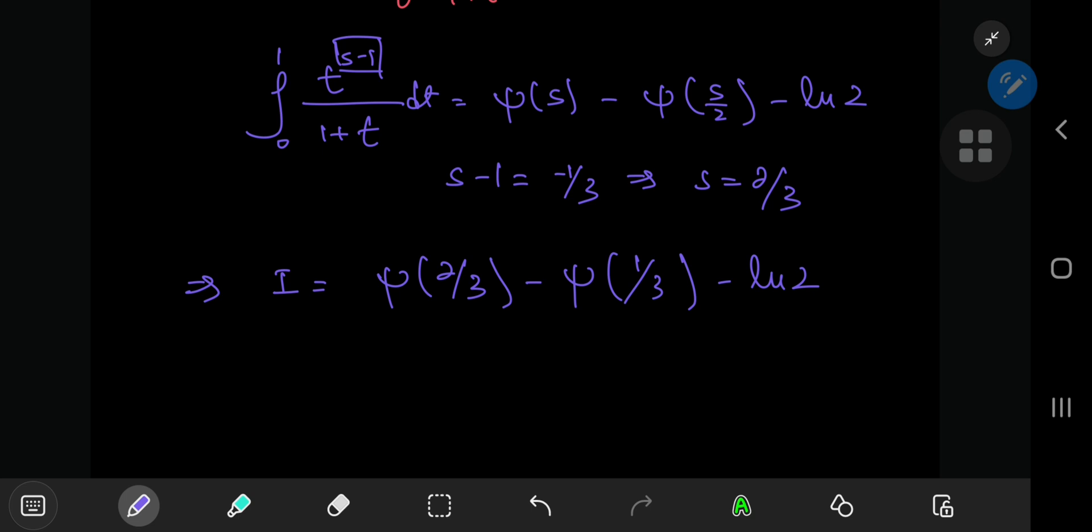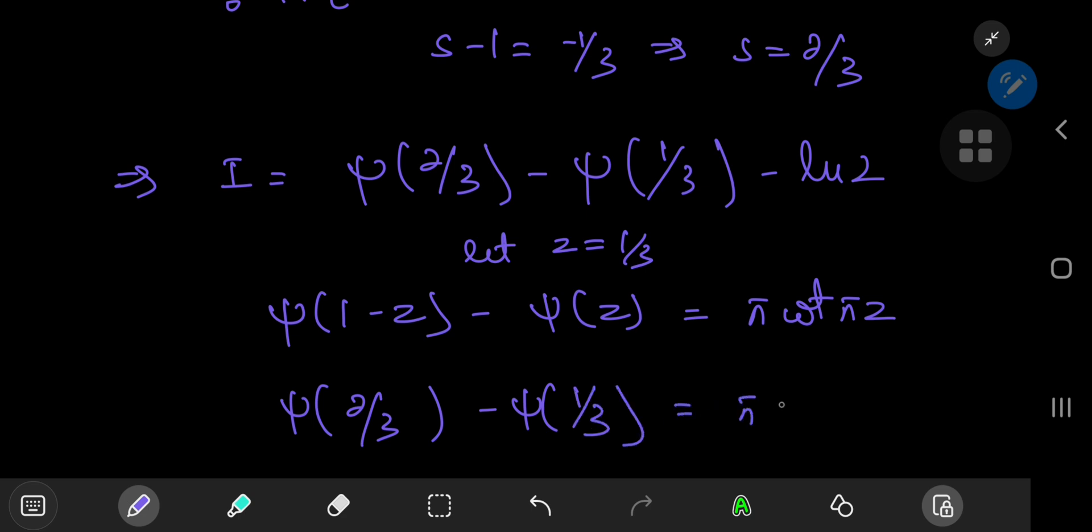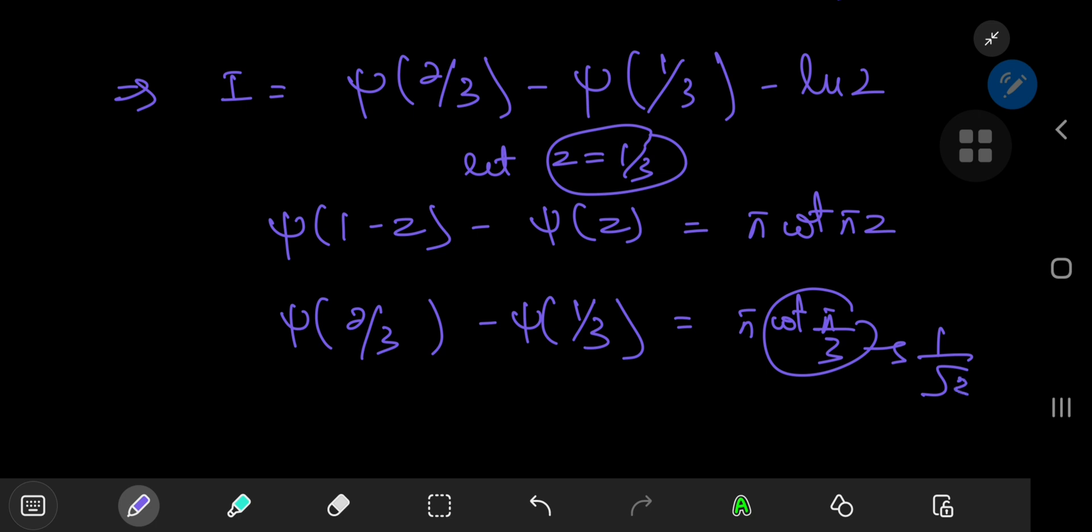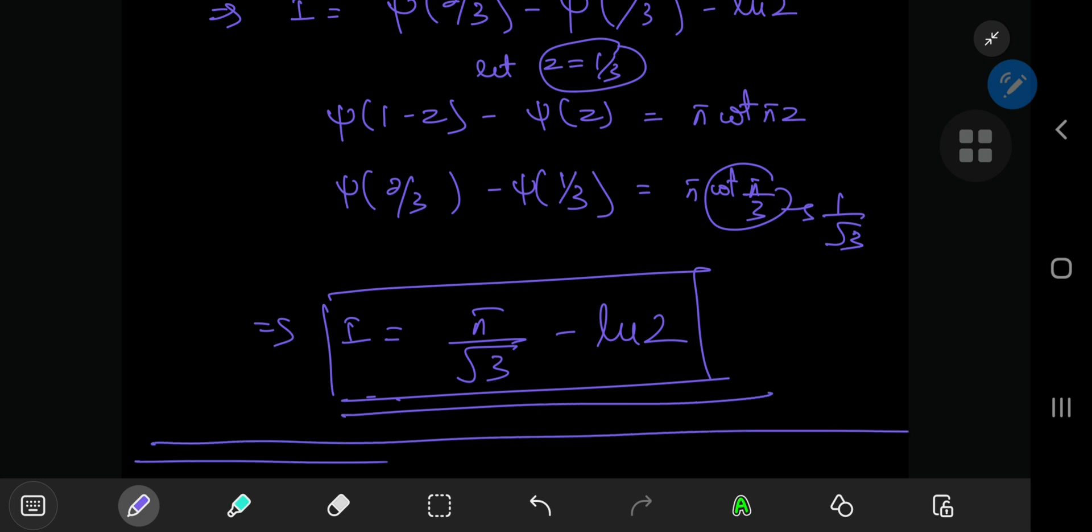We can make use of the properties of the digamma function. There's this really nice reflection formula where psi 1 minus z minus psi z equals pi times the cotangent of pi times z. If you let z equals 1 by 3, then digamma 2 thirds minus digamma 1 third equals pi times cotangent of pi by 3, which is the reciprocal of the square root of 3. So your integral i equals pi divided by the square root of 3 minus log 2, which is a pretty nice result and a pretty smooth solution for such a menacing looking integral.